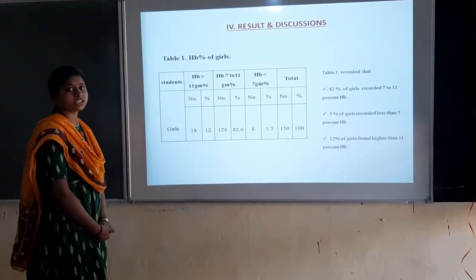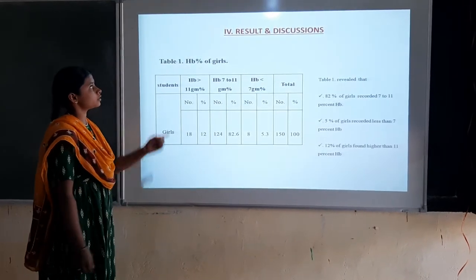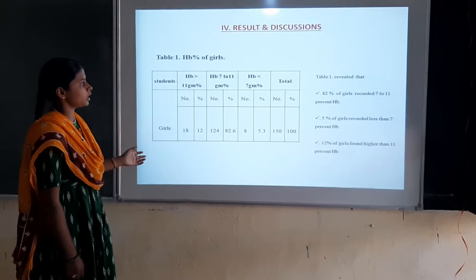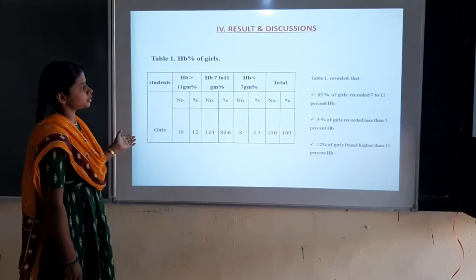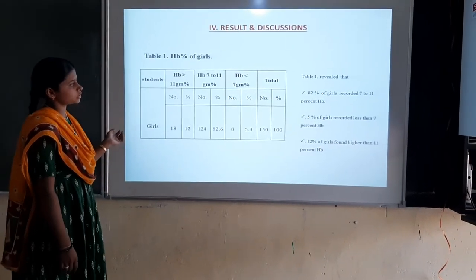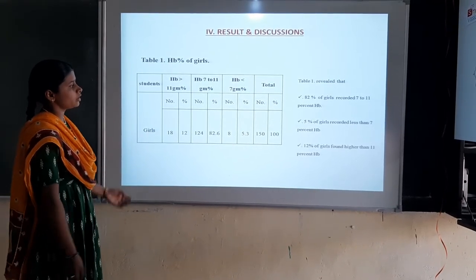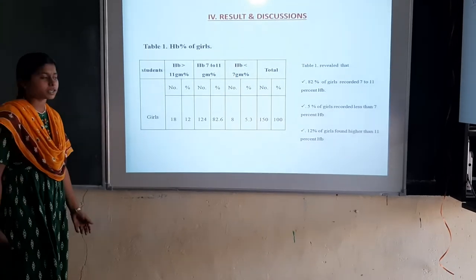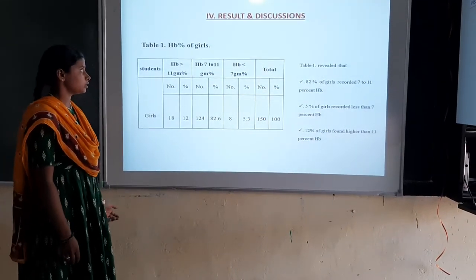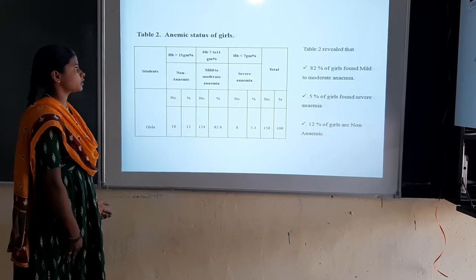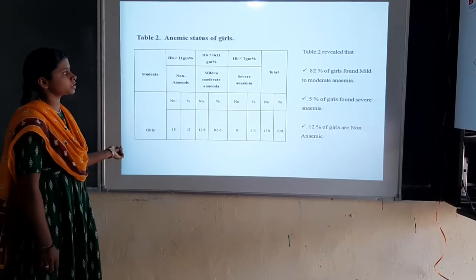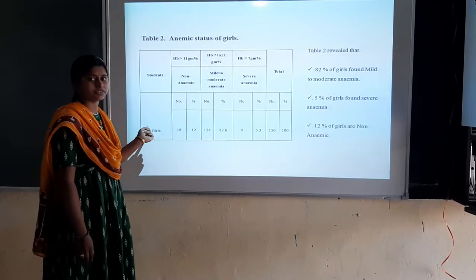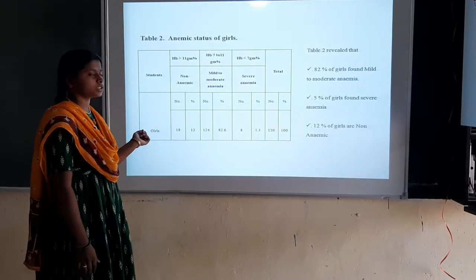Now presenting the results and discussion. Regarding hemoglobin percentage: 82% of girls recorded 7 to 11% hemoglobin, 5% of girls recorded less than 7% hemoglobin, and 12% of girls had higher than 11% hemoglobin. Regarding anemia status: 82% of girls were found to have mild to moderate anemia, 5% had severe anemia, and 12% of girls were non-anemic.